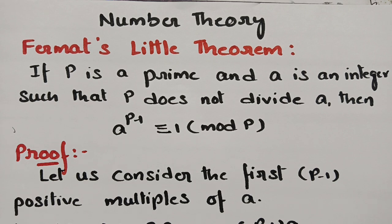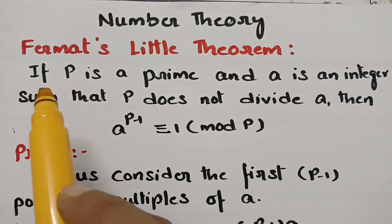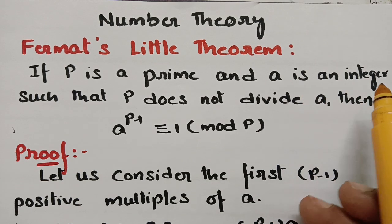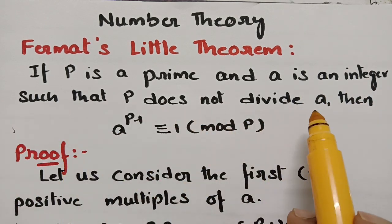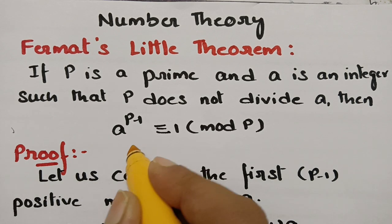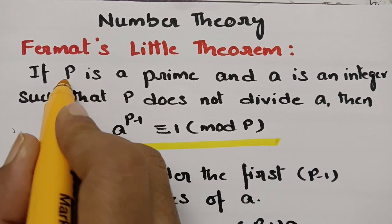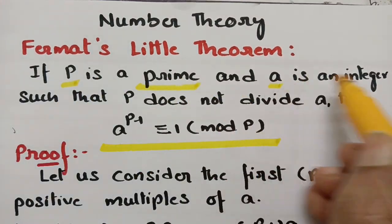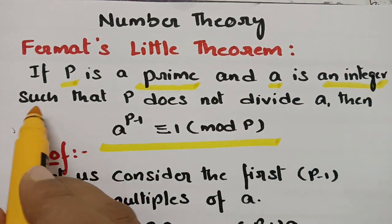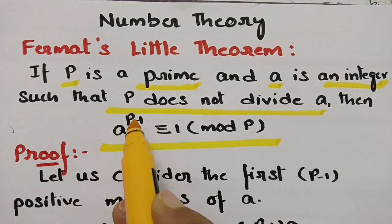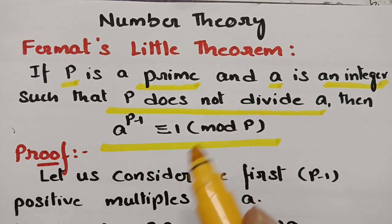Let's get started with today's statement of Fermat's Little Theorem. The statement states that if p is a prime and a is an integer such that p does not divide a, then a^(p−1) is congruent to 1 mod p.